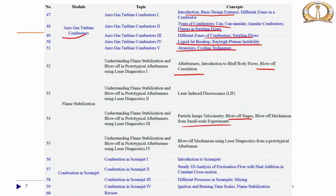Finally, we looked into scramjet combustion, where we introduced the scramjet, a steady 1D analysis of frictionless flow with heat addition in a constant cross-section, different processes in a scramjet like mixing, ignition, burning time scales, and flame stabilization. That is all we have covered for this course — it is a lot of material, and I hope you will find this useful and exciting to pursue these topics further in your career.